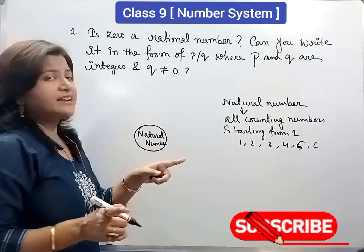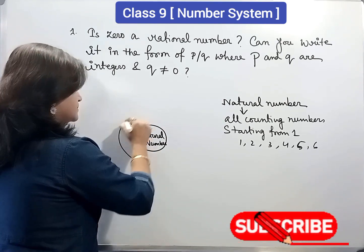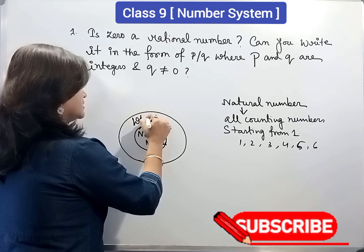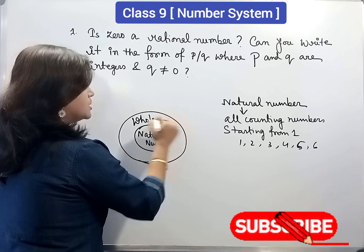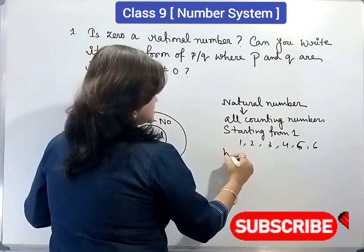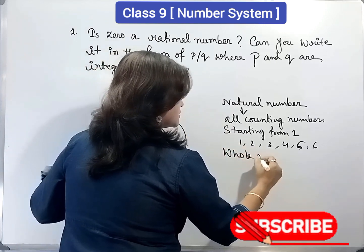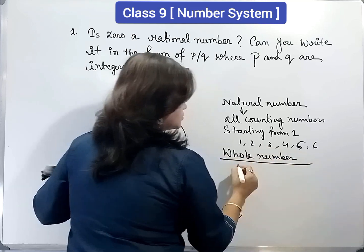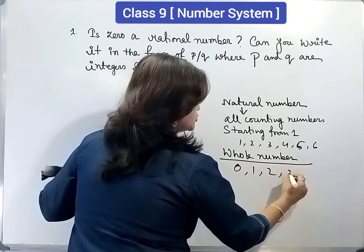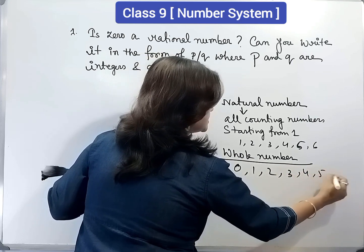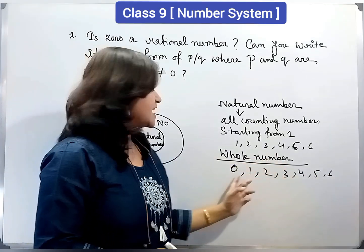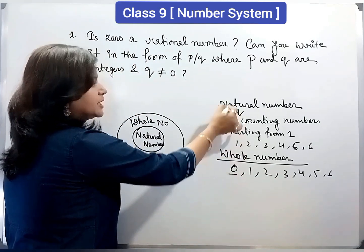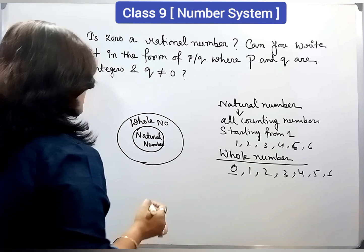Now, when we add 0 with natural number, then it is called whole number. When we start our counting from 0. 0, 1, 2, 3, 4, 5, 6. So, whole numbers are the counting numbers along with 0. So, 0 is a whole number but not a natural number.